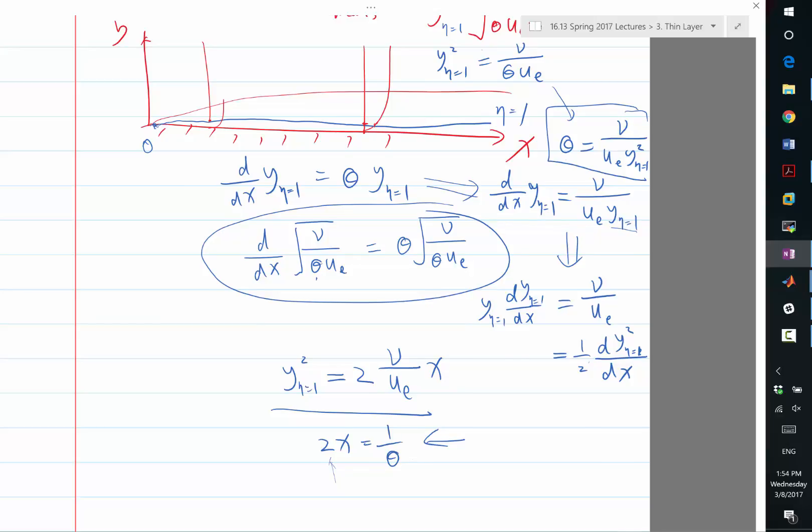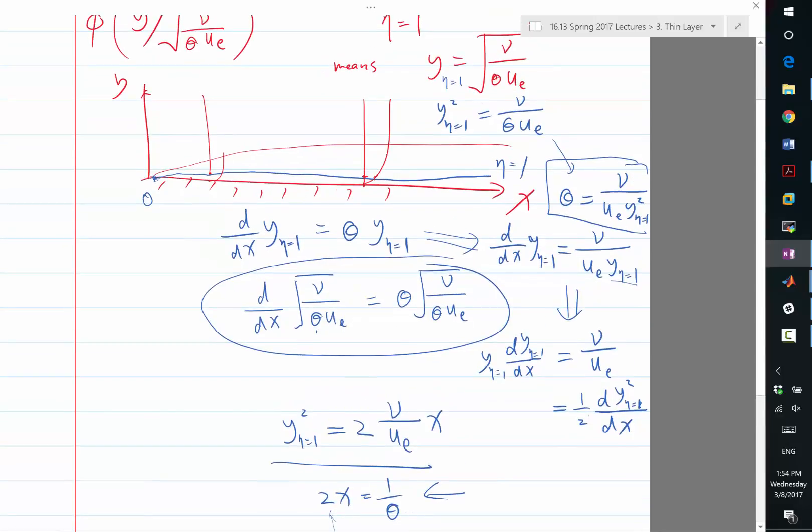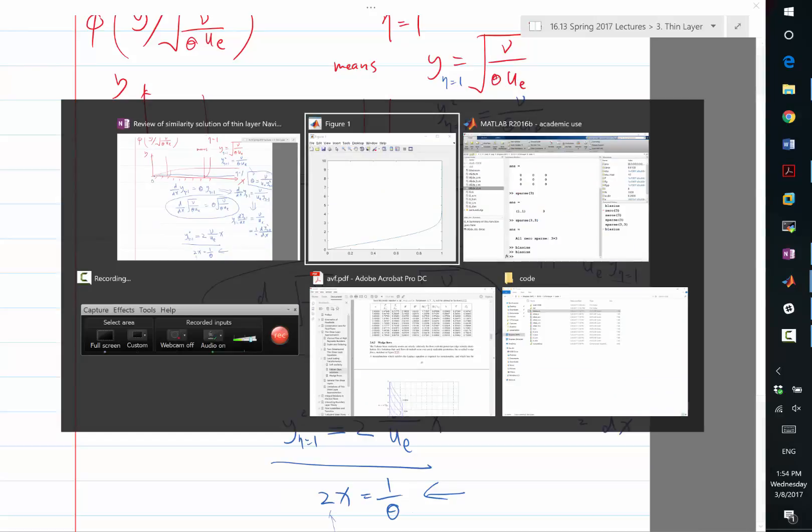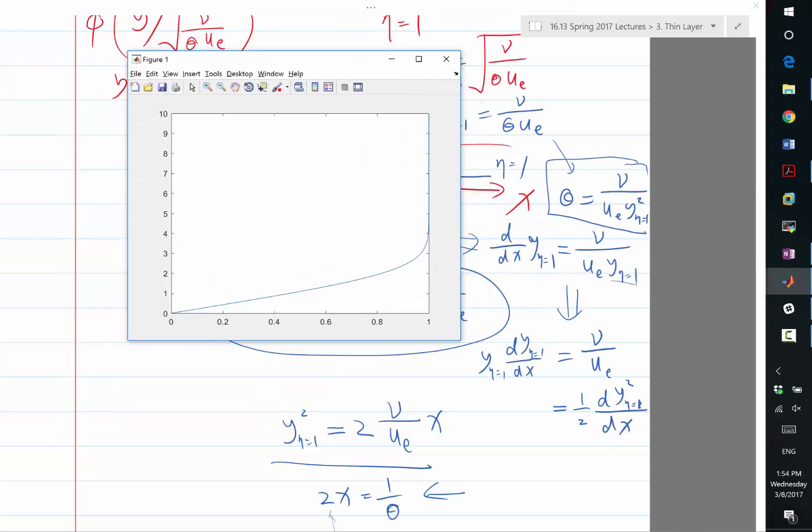So I do think it's probably also very natural, maybe more natural, instead of using y theta equal to 1, to use just the displacement thickness. And we can actually calculate from this numerical solution what is the displacement thickness compared to my choice of eta equal to 1.